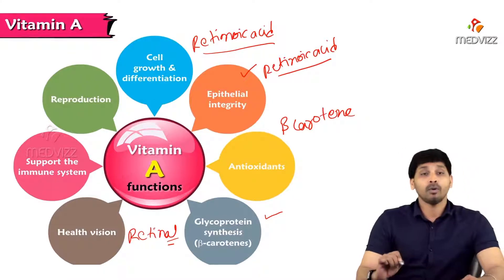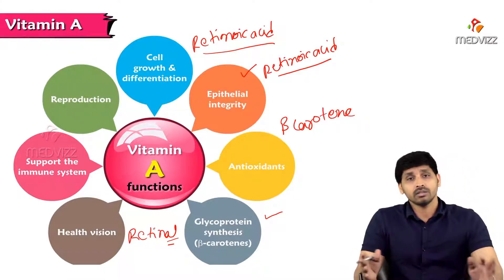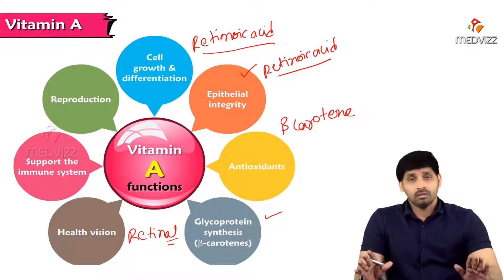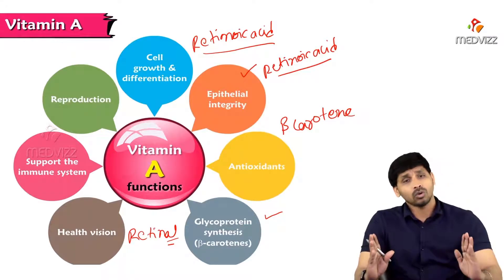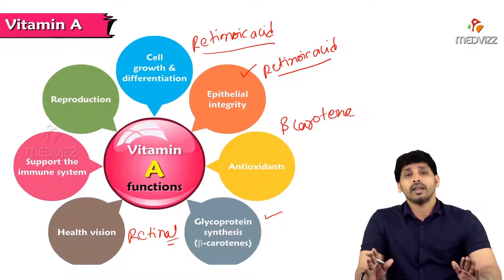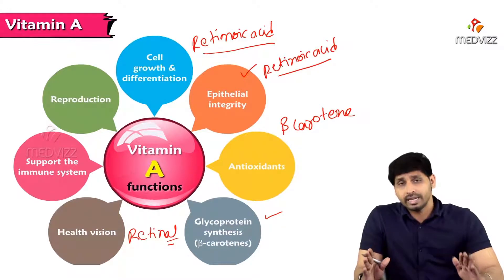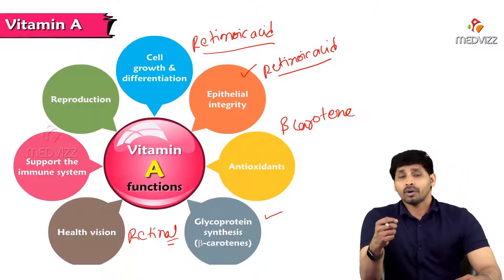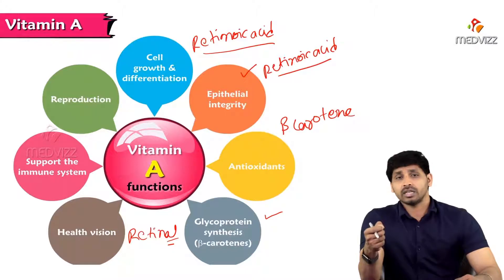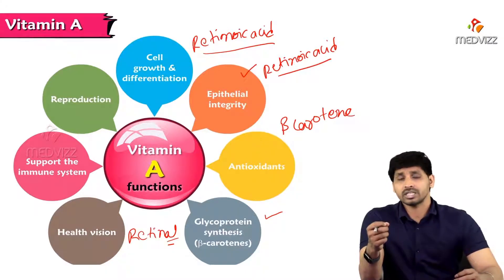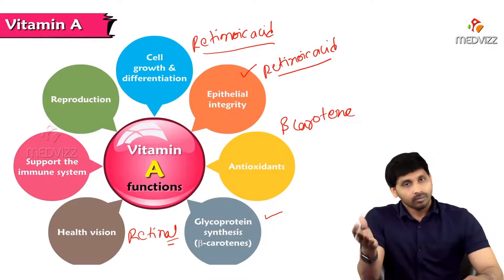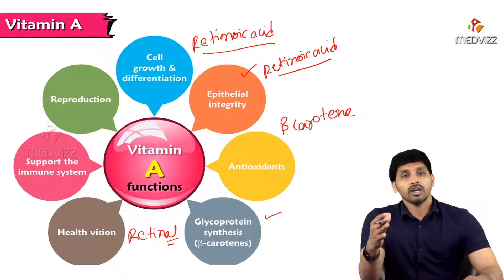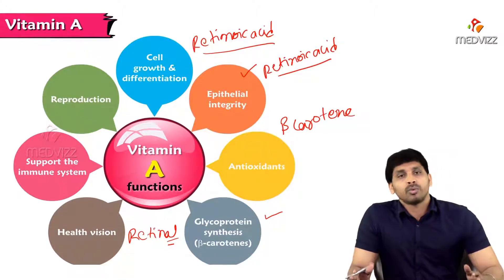Another function is support of the immune system. At the protein synthesis level, vitamin A manipulates DNA, so antibody production is also encouraged at the DNA level with the help of vitamin A. Lastly, reproduction — gonad cells are also made up of epithelial cells, and for the reproductive system to be active there should be healthy epithelium, which is maintained by vitamin A. That's all about the functions of vitamin A.